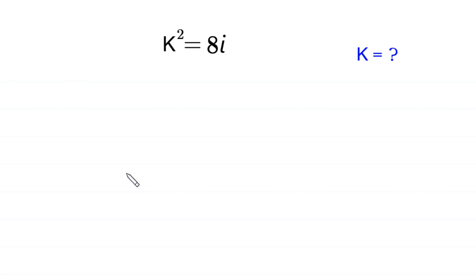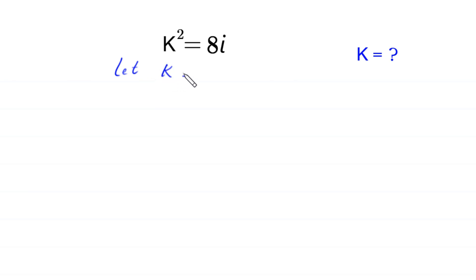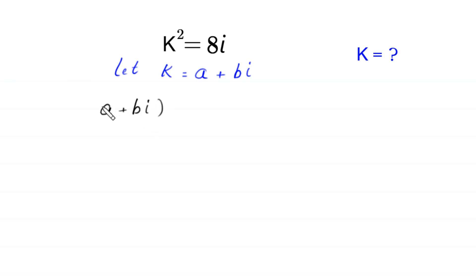Welcome to how to solve this algebra equation: k squared is equal to 8 times i. We need to find all possible values of k. Let's start — we suppose that k is equal to a plus b i, then this equation will become a plus b i whole squared is equal to 8 i.